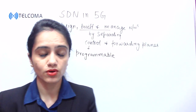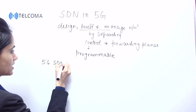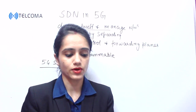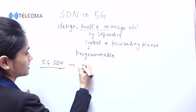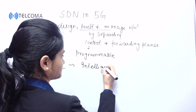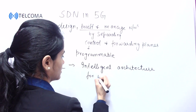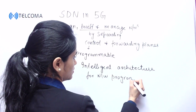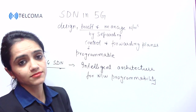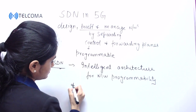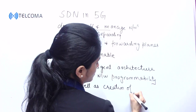SDN enables the underlying infrastructure to be abstracted for new applications and network services. So SDN is redefining the network architecture so that it can support the various requirements of fifth generation. As fifth generation SDN, it provides an intelligent architecture for network programmability as well as the creation of multiple network hierarchies.